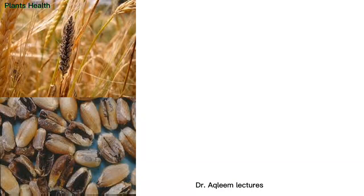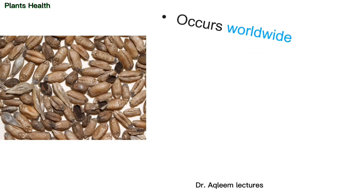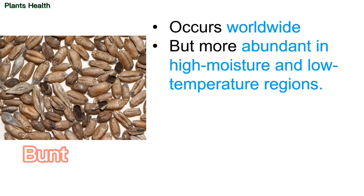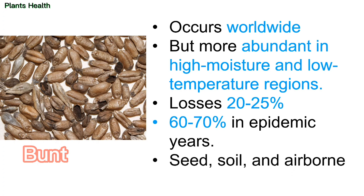Hello friends. Today we will talk about a disease, and that disease is bunt of wheat. It is also known as cover smut or stinking smut. It occurs worldwide and is more abundant in high moisture and low temperature regions. Losses are about 20 to 25 percent, and in epidemic years losses are about 60 to 70 percent. The pathogen is seed, soil, and airborne.